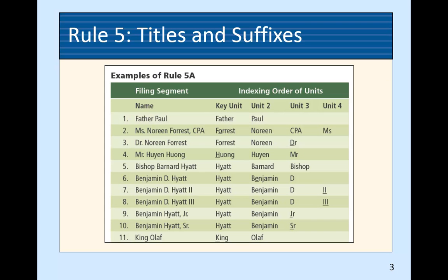Here are some examples. Father Paul — that's number one. But look at number five: Bishop Bernard Hyatt. Why don't we put Bishop first like we did with Father Paul? Because there's a last name. That's your trigger point — if there's a last name, you treat it as a regular person name. If there isn't a last name or first name, the title is the key unit. This also shows how Roman numerals II and III come before junior and senior.